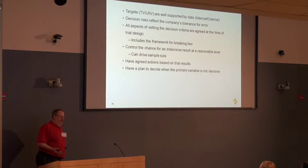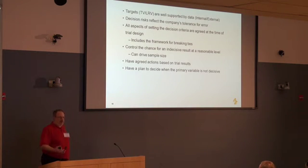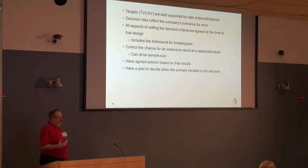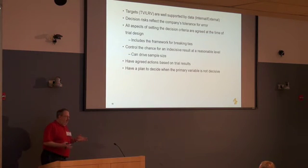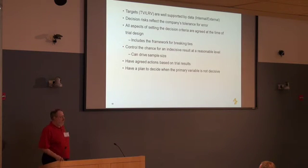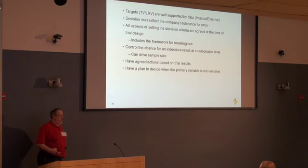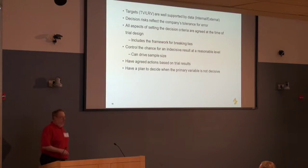A few principles to go along with this. Number one: the targets — the lower reference and the target value — are supported by data as much as possible. The earlier you are in development, the fewer data you have to work with, and in areas without many prior treatments you may be working on a subjective prior. Decision risks reflect the company's tolerance for error — usually there's guidance within your organization specifying something like no more than 25% amber given the target is true. All aspects of setting the decision criteria are agreed at the time of trial design. Do this upfront. Don't wait until the end — it will be very subjective and cause many of the problems you're trying to avoid.